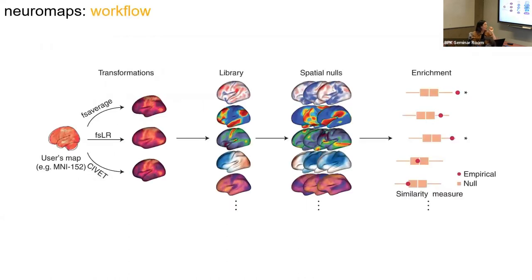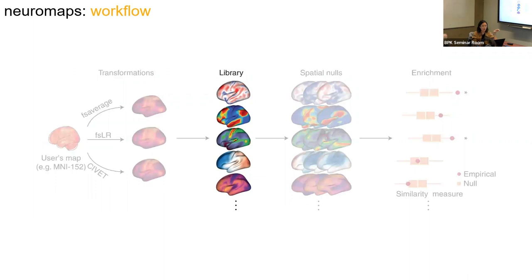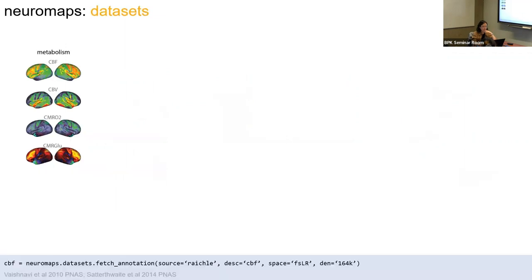Neuromaps is there for accessing, transforming, and robustly comparing human brain maps. Here's the general workflow — it's very modular, so you can take the pieces you're interested in. I'm going to start with the library part. Like in the Earth analogy, these are the different data maps you'd want to compare your data with. We call these maps 'annotations.' Neuromaps used to be called Brain Annotation before early days, which is why everything is annotation-based.